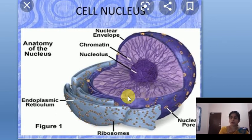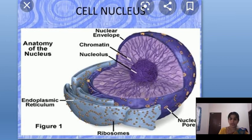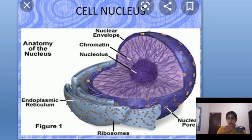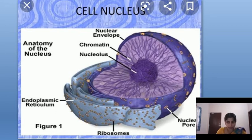Chromosomes contain the basic hereditary units called genes. Genes are responsible for the transmission of characters from parents to offspring. That's why sometimes people say you behave like your father, or your eyes are like your mother — those characters are transferred from your parent's genes to your body.